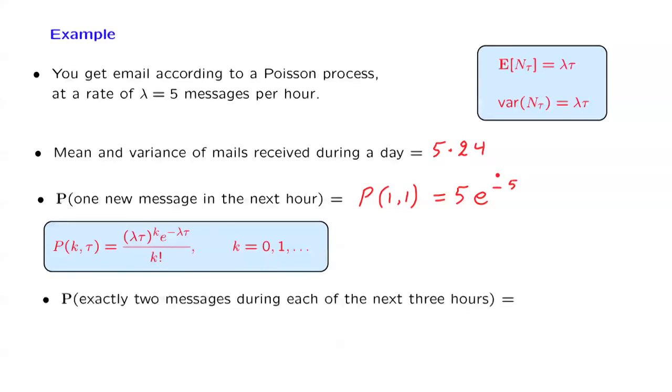Finally, what is the probability that during each of the next three hours, you obtain two messages? So this is an event which is actually the intersection of three events: the event of two messages in this hour, two messages in this hour, and two messages in that hour.